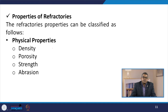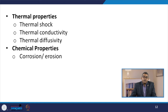The properties of refractories can be classified as physical properties — density, porosity, strength, and abrasion — then thermal properties: thermal shock, thermal conductivity, and thermal diffusivity, and chemical properties: corrosion and erosion. The physical property requirements for shaped and unshaped refractories are different.